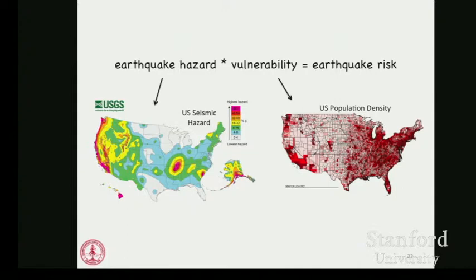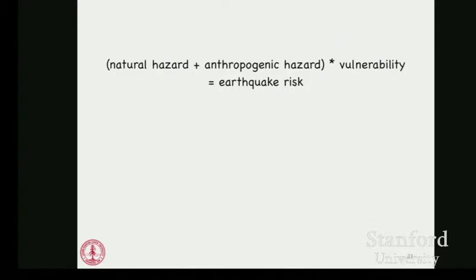Vulnerability is specifically dependent on population density, as well as how well that population can recover from damage. Moving forward in understanding triggered earthquake risk, the important factor that is unique from natural earthquake risk is the anthropogenic influence — things like injecting into the subsurface, the volumes and pressures, the actual geology. We've created a framework that oil and gas companies as well as regulators can use to limit these events.